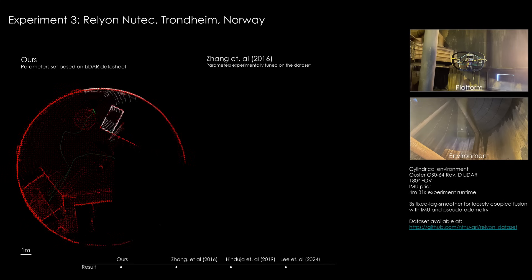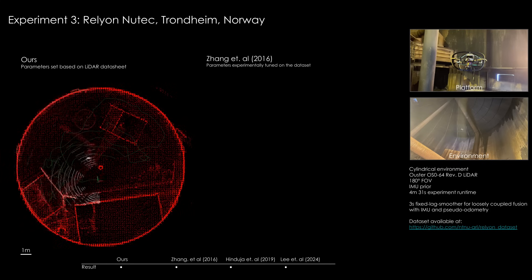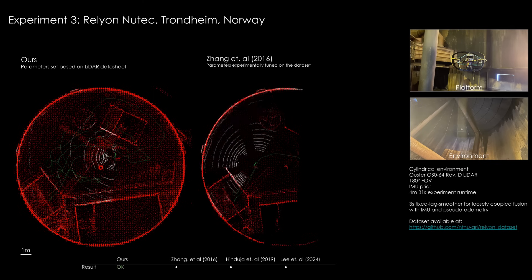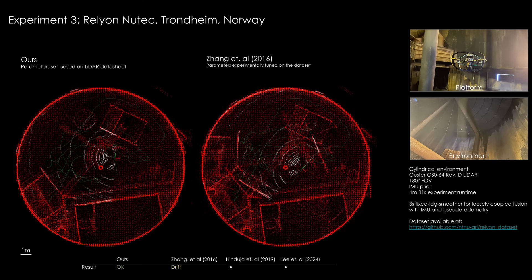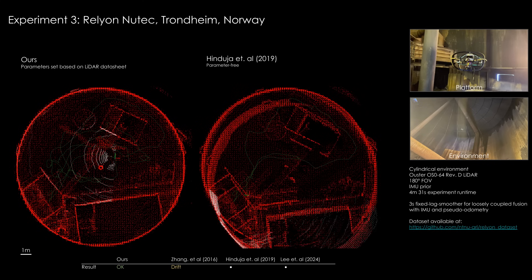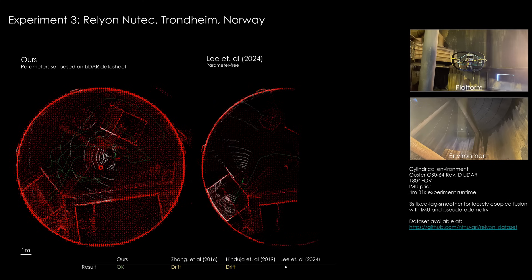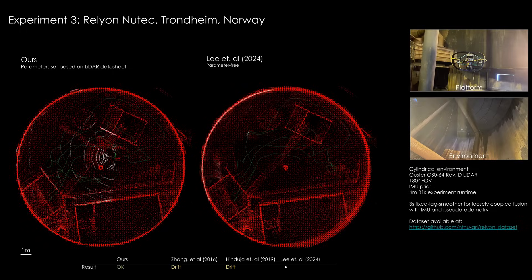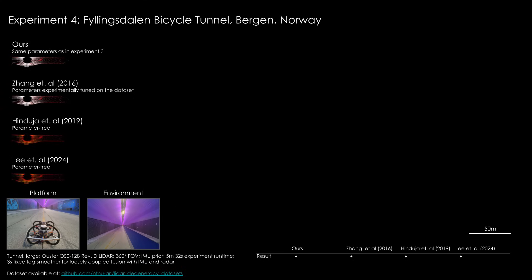The third experiment uses an aerial robot in a cylindrical environment. The field of view of the Austro O064 LiDAR is reduced to 180 degrees to increase the difficulty. The method of Sangatal yields rotational drift as it fails at detecting the rotational degeneracy. The method of Hinduatal yields a particularly noisy map due to estimation errors in both rotation and translation. Finally, the method of Liatal yields drift in rotation and translation. Unlike the baseline methods, our method does not exhibit degeneracy-induced drift.